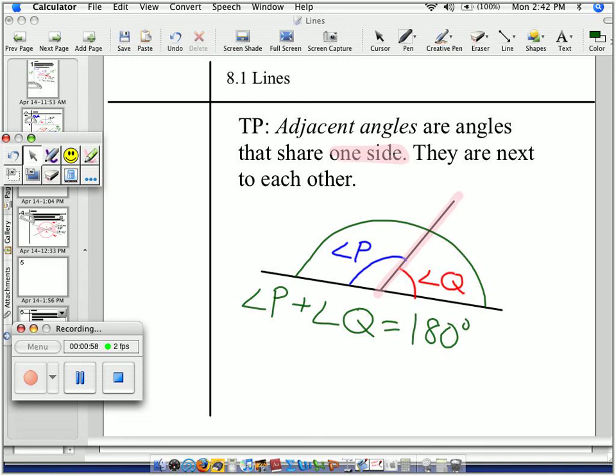Suppleberry. Is that a new berry? Strawberry, blueberry, suppleberry? Okay, angle P and angle Q are supplementary.